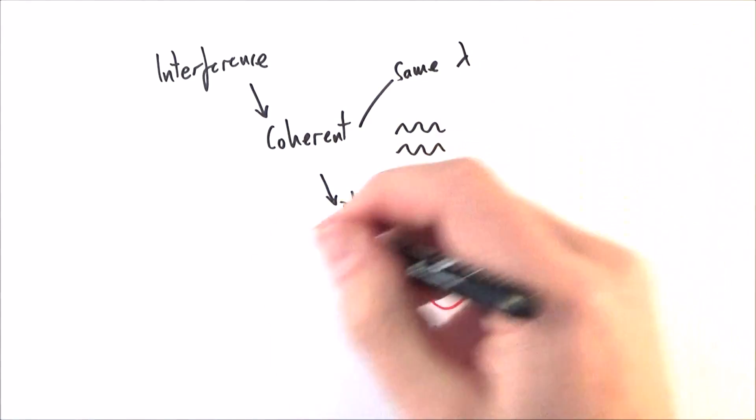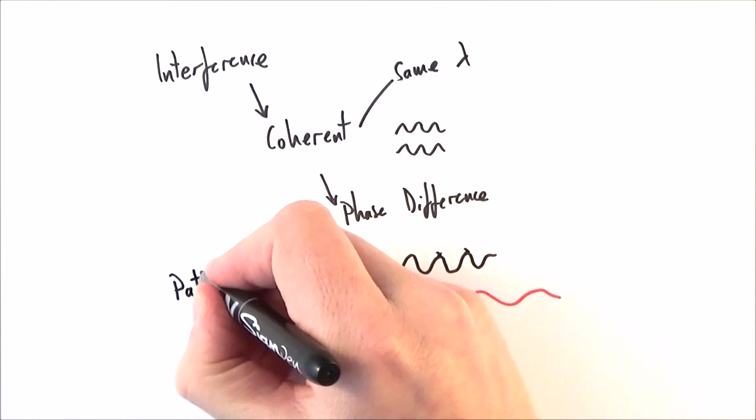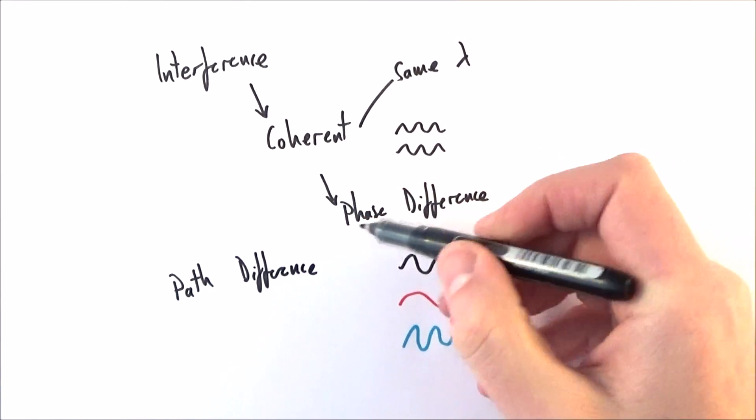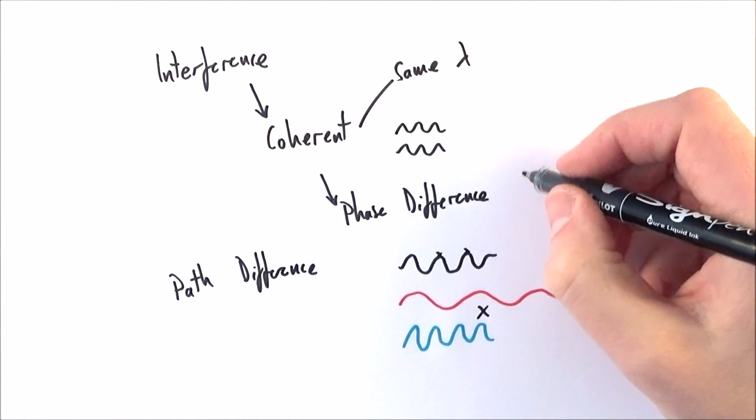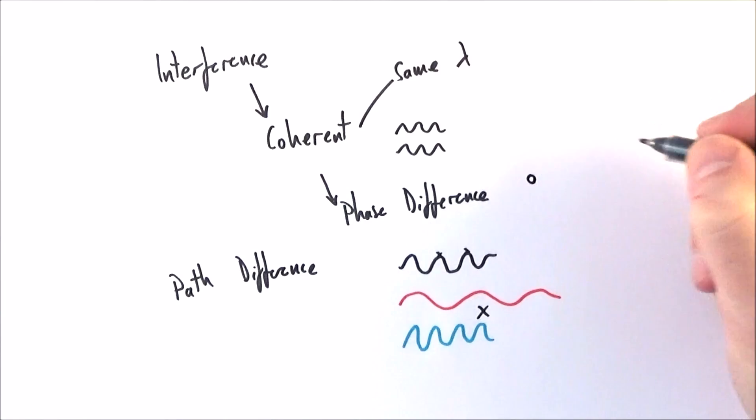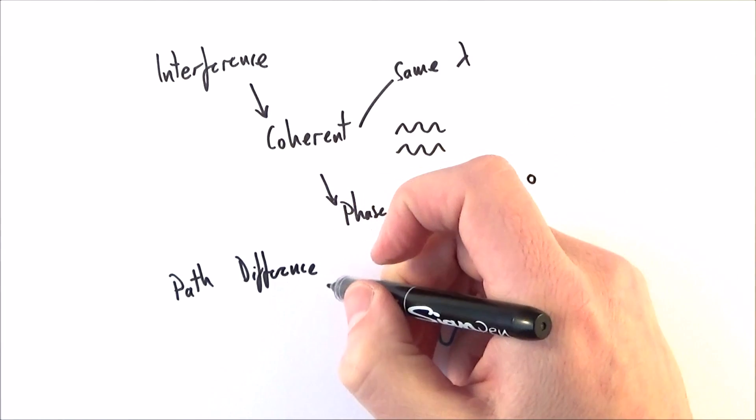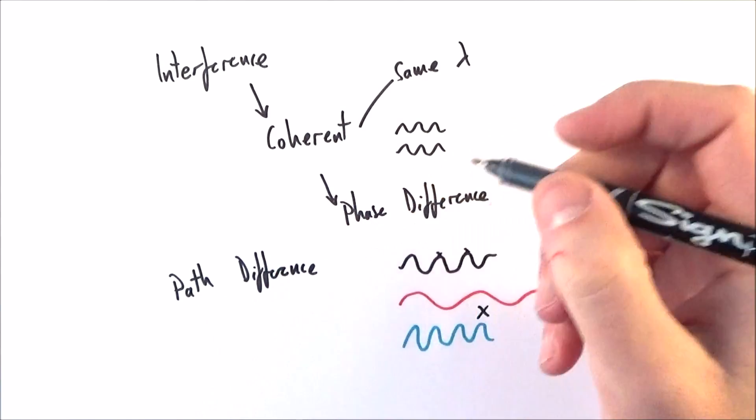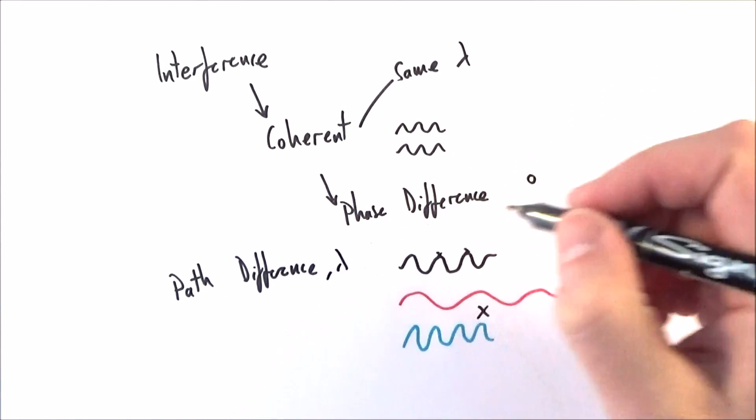Now there's one other thing that you need to know about, which is something called path difference. Now this is similar to phase difference, because they have a P to begin with, but the difference is that phase difference is measured in degrees, or perhaps radians. Path difference is measured, because it's a path, it's a length, this is measured in metres, or fractions of a wavelength.